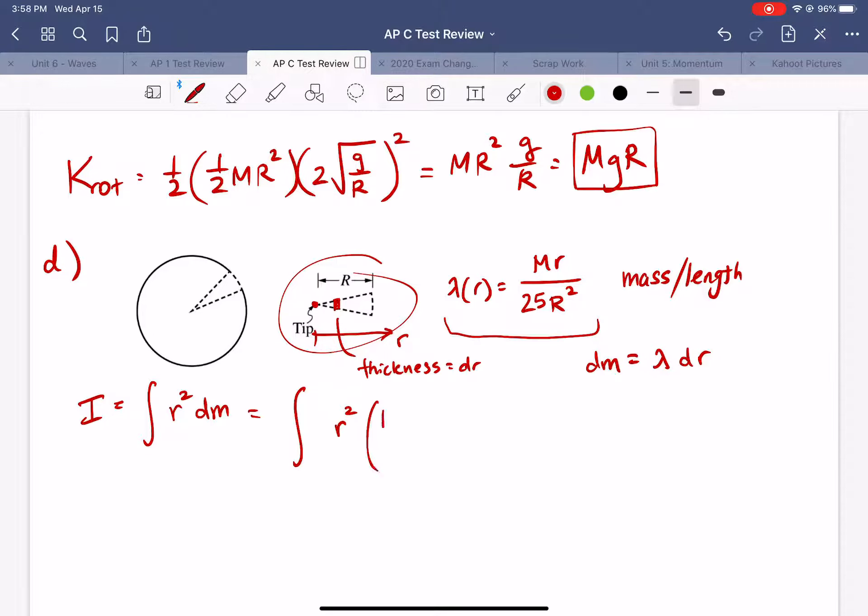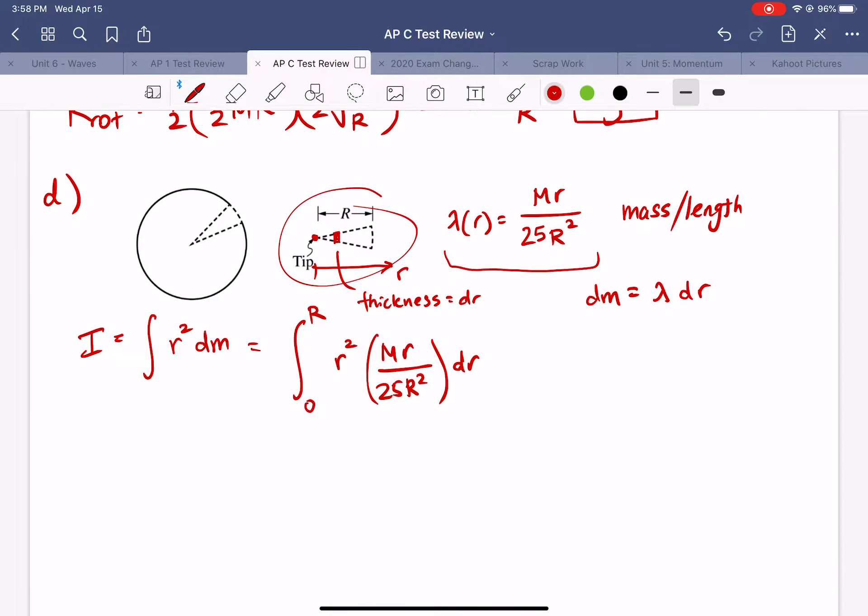So I'll plug that in lambda is this expression here and then dr and we need to integrate this over the entire wedge. So r is going to go from zero to big R which is the radius of the disk. All right so to make this easier I'm going to move all of my constants out in front so make sure you don't get little r and big R confused here. Big R is a constant it's the radius of the disk, little r is our variable that changes as we move along this wedge.